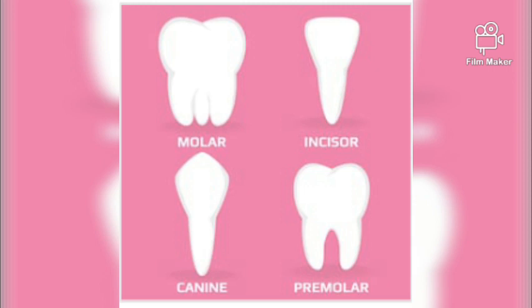The third one is premolars. Premolars are eight in number, two on each side of the canine in each jaw. These teeth have a flat surface bearing small cusps and ridges. Premolars are used to crush and grind the food.